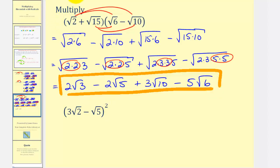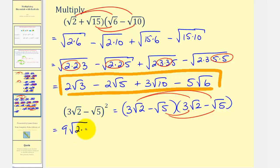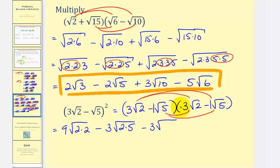For the last example, there are no shortcuts — we have to expand. This is equivalent to three square root of two minus square root of five, times the quantity three square root of two minus square root of five. We cannot just square the first term and square the second term. Again we'll have four products. The first product: three times three is nine, giving nine times the square root of two times two. Then minus three times the square root of two times five. Then minus three times the square root of five times two. And finally, negative one times negative one is positive one, so plus one times the square root of five times five.